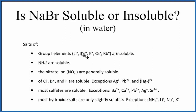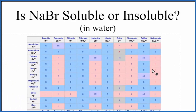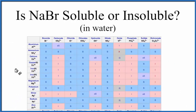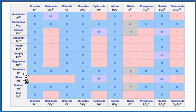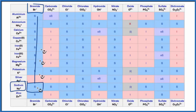Another way we could do this is look at the solubility chart. Some teachers allow you to use the solubility chart on tests; others want you to memorize the solubility rules, so check with your teacher. If we look at the solubility chart here, we go down looking for sodium — these are the positive ions. Here's sodium, and then across the top, here's the bromide ion. We go down and we see sodium bromide. That S means that it's soluble in water, the same thing the solubility rules told us.